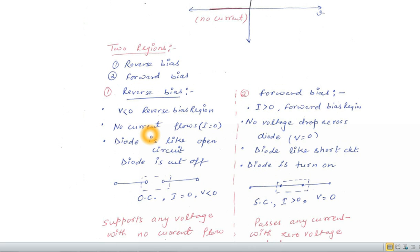In the reverse bias there is no current flow. It means the value of I is 0. In the forward bias there is no voltage drop across the diode, i.e. V is equal to 0.